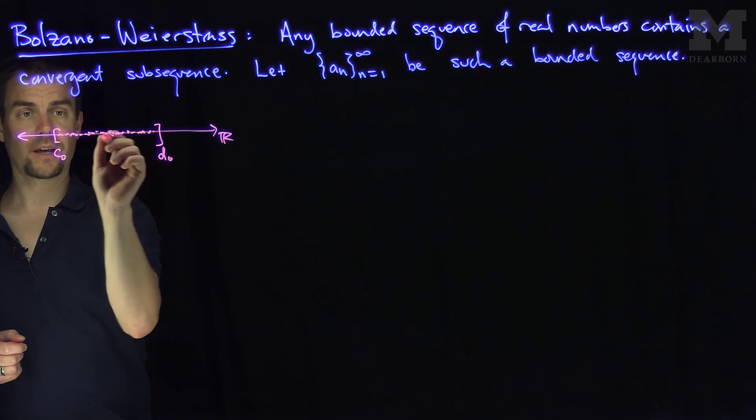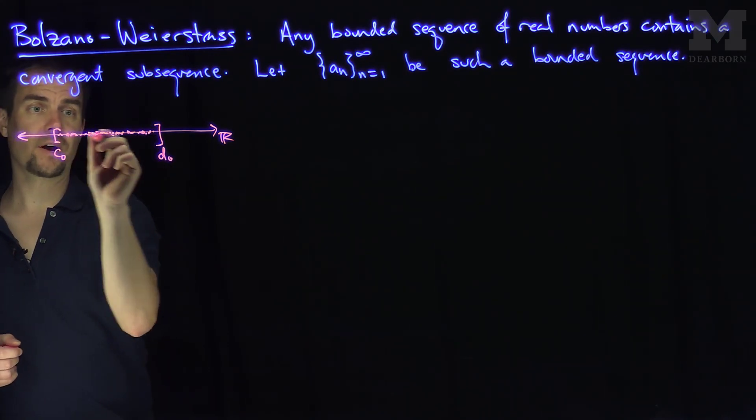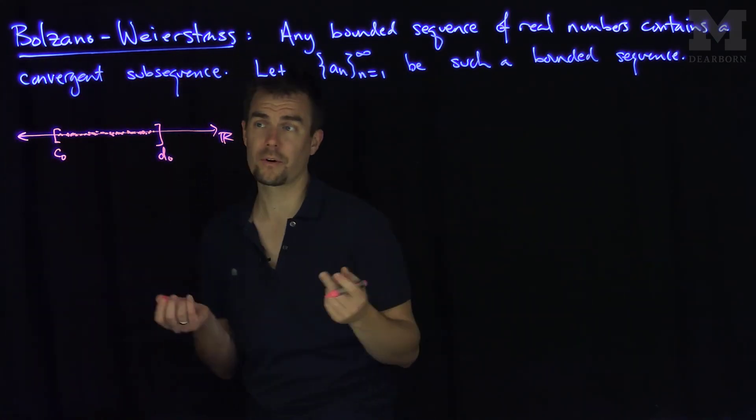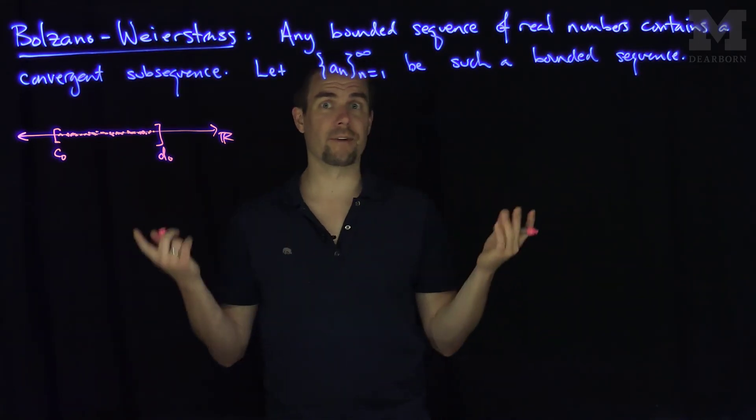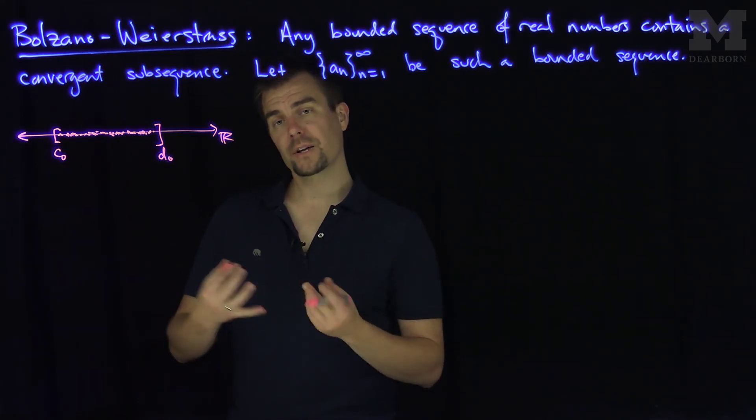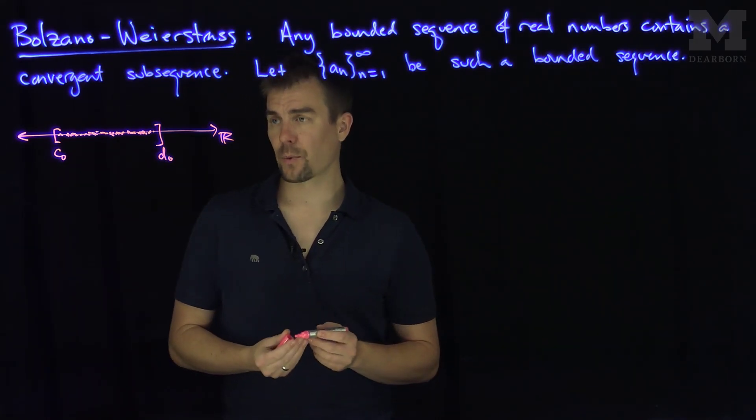Now, of course, it might oscillate, right? It might oscillate between the left and the right, so we don't necessarily know that it's going to converge, because it might just hop back and forth between c0 and d0. But we want to extract a convergent subsequence from this.